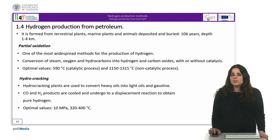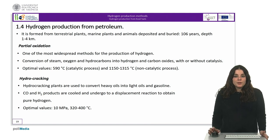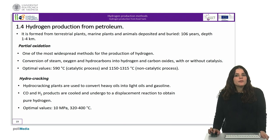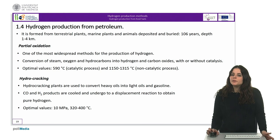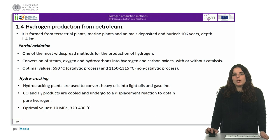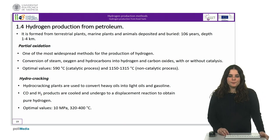The partial oxidation of heavy oils is usually used in large installations. The gaseous products CO and hydrogen are produced at temperatures of about 1,200 to 1,350 degrees Celsius, then cooled and subjected to a water-gas shift reaction to obtain pure hydrogen.